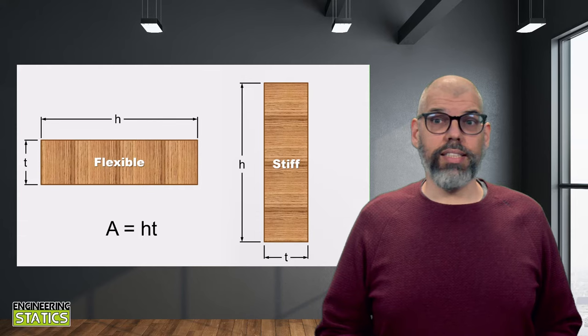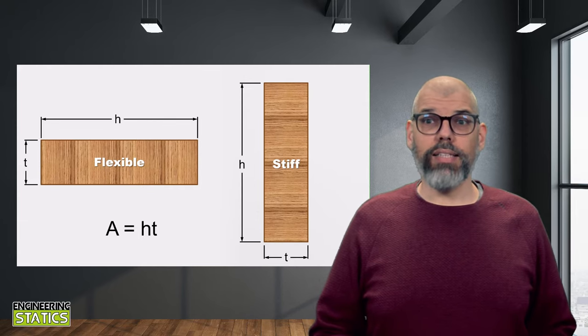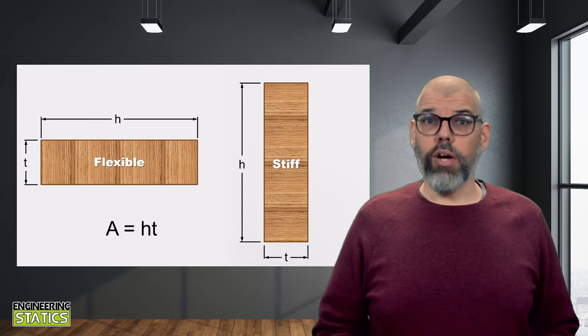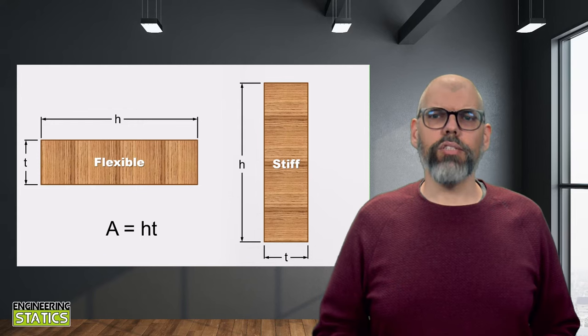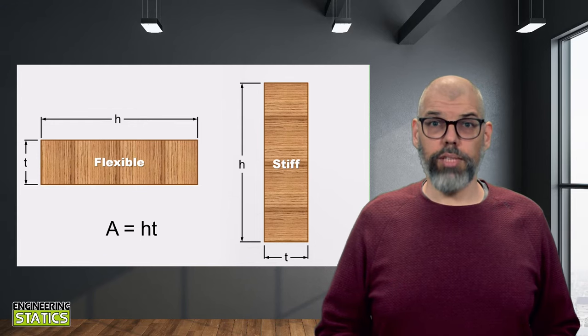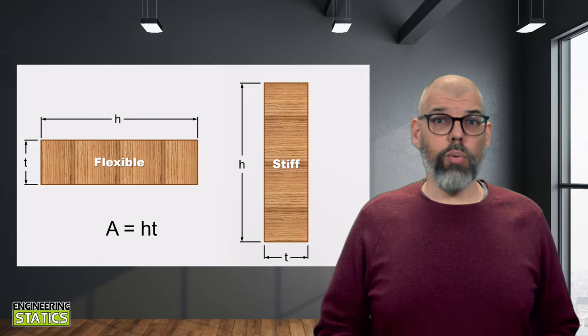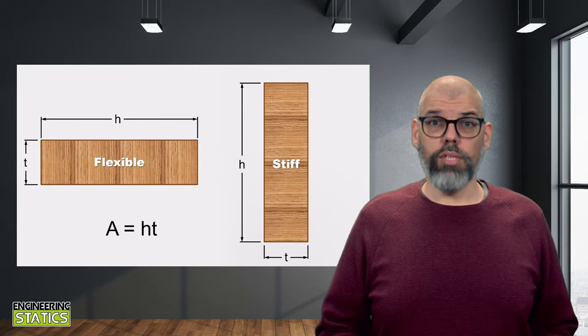In both instances, the beam has the same cross-sectional area, but the bending stiffness is dramatically different. So the area alone is not sufficient to capture this property of the beam. This is where the area moment of inertia comes into play. But in order to understand and derive this quantity, we have to briefly look at how the beam deforms under bending.